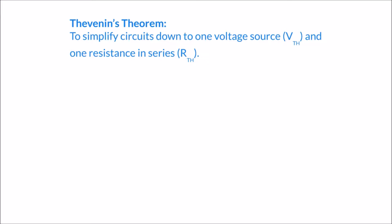Welcome to this video on Thevenin's Theorem. In this video we're going to apply several of the topics we've covered previously to a circuit theorem that involves the simplification of circuits. A fairly simple definition of the theorem is to simplify circuits down to one voltage source, which we call the Thevenin voltage or VTH, and one resistance in series, which we call the Thevenin resistance. We can take any linear circuit and simplify it down to something that looks like this.